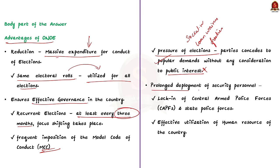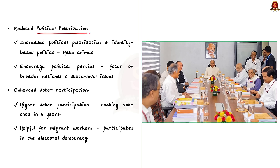Thirdly, the issue of prolonged deployment of security personnel will be solved. About two to five state assemblies go to polls in every six-month period, leading to locking of central armed police forces and state police forces for prolonged periods. Simultaneous elections will lead to effective utilization of human resources. Fourthly, One Nation, One Election will reduce political polarization. Frequent elections can increase political polarization and identity-based politics, which can lead to hate crimes across society. Simultaneous elections will give no election pressure for five years, encouraging political parties to focus on broader national and state-level issues.